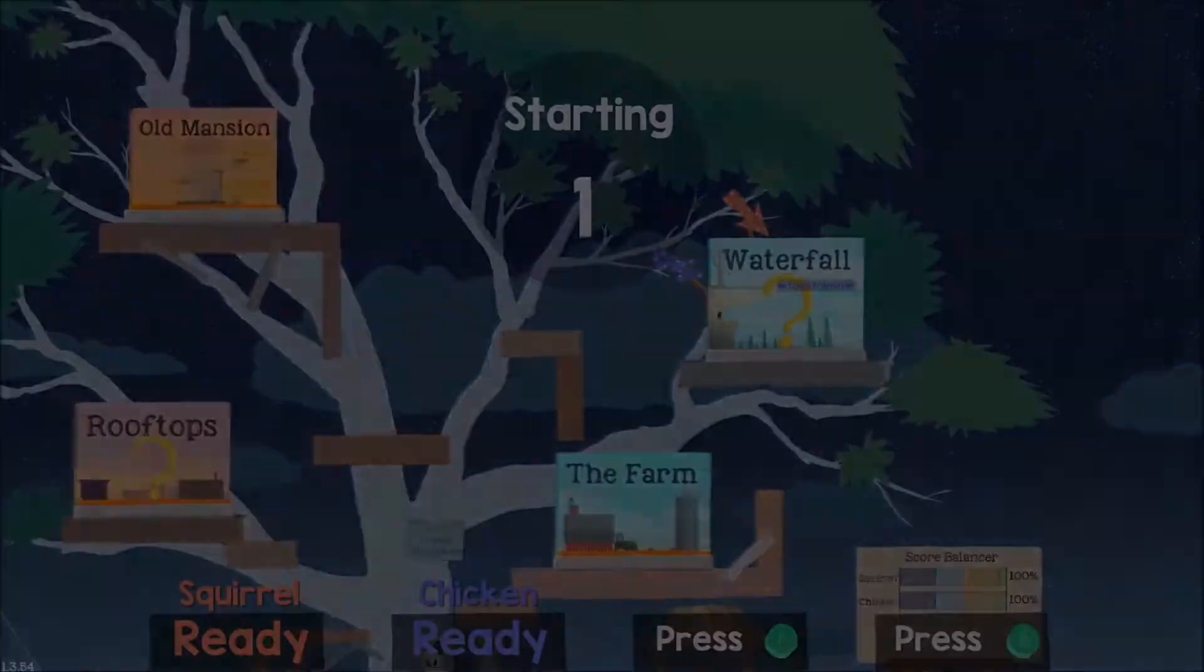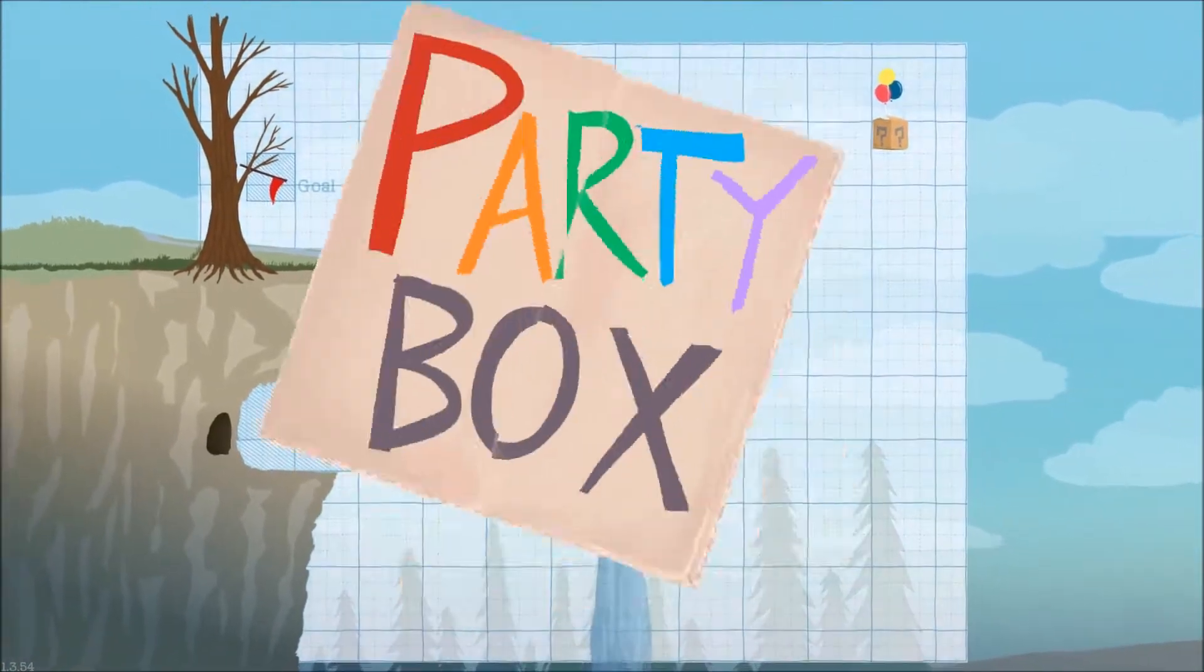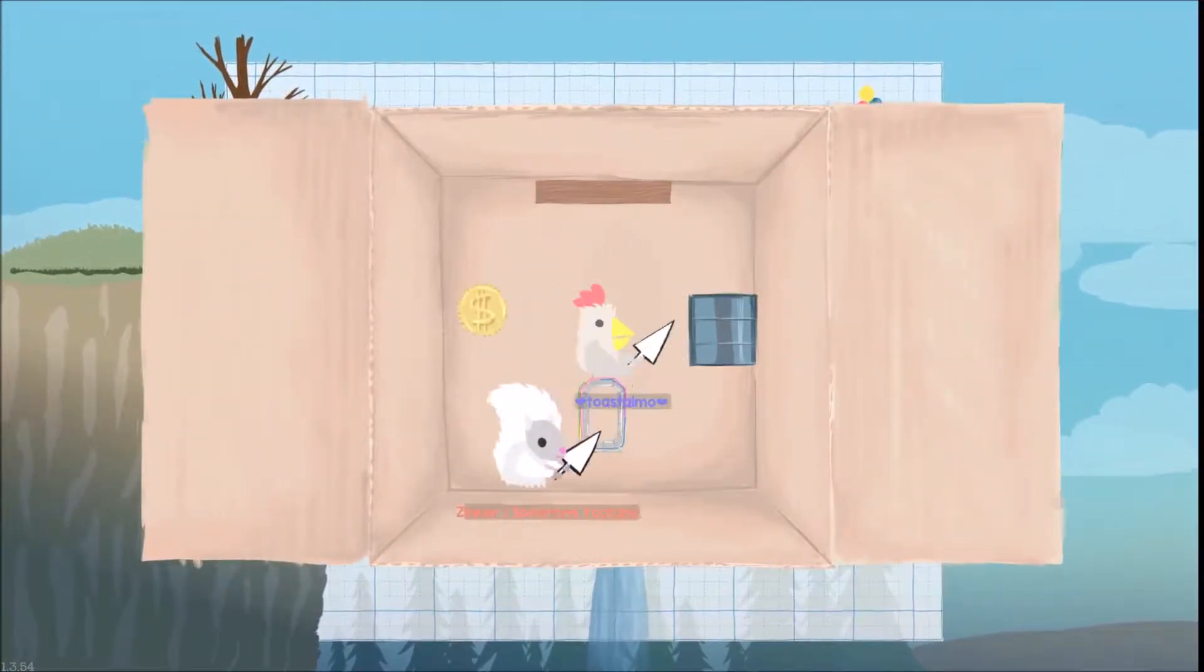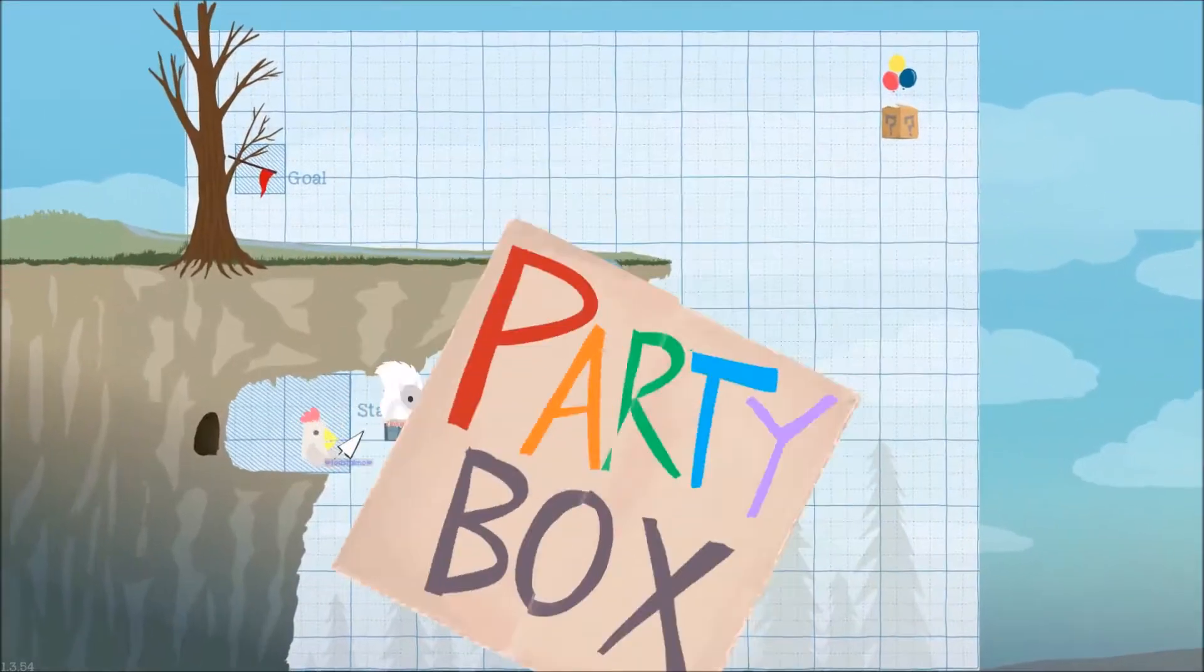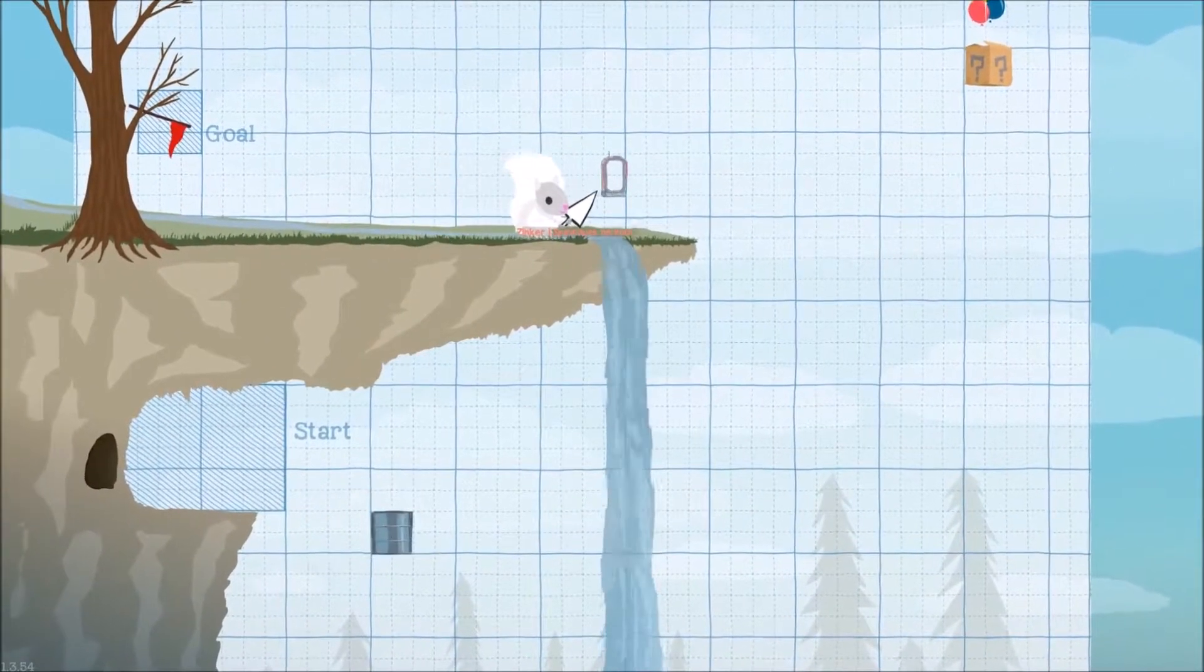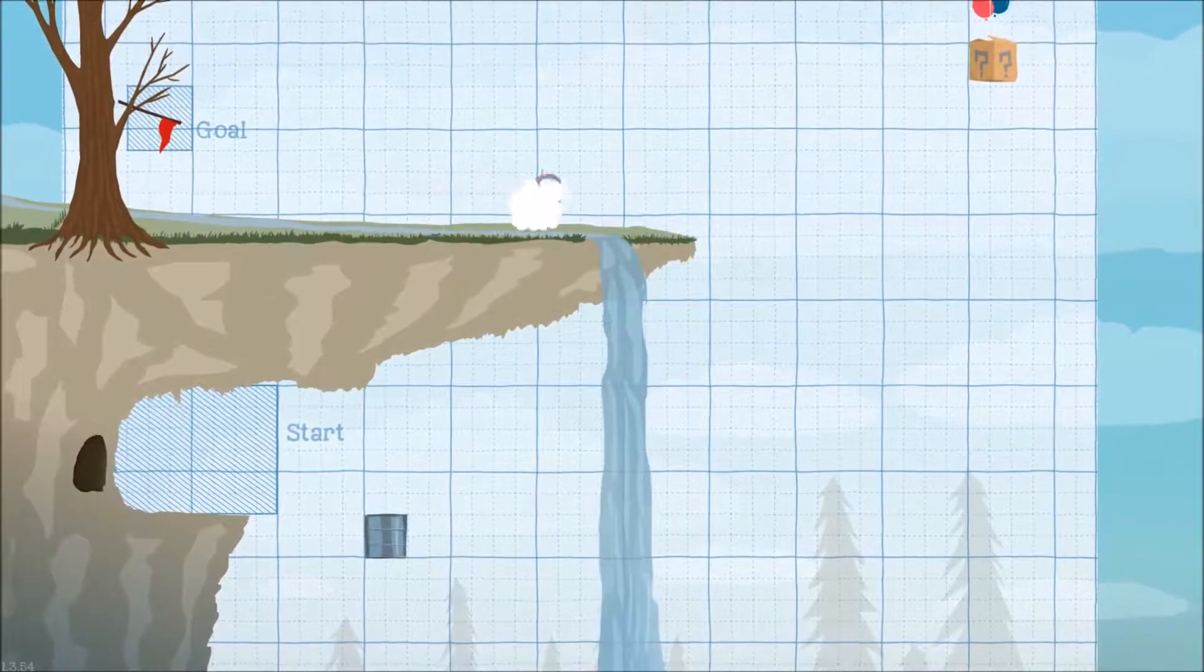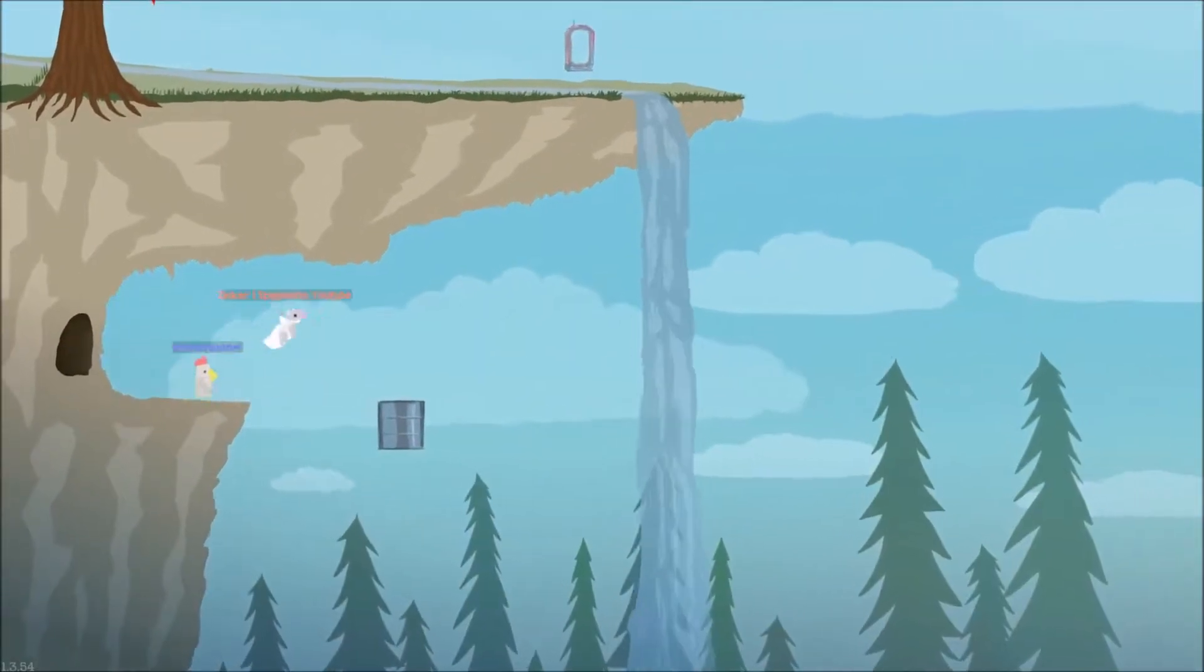Hello everybody, welcome back to Ultimate Chicken Horse. We're on Waterfall. I actually like this level a lot. I guess I'll put this here. Oh, that's right, we're doing party mode, so you select. Why did they give you that immediately? I don't like that.